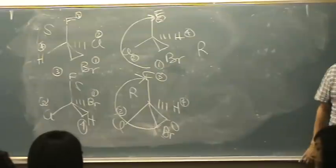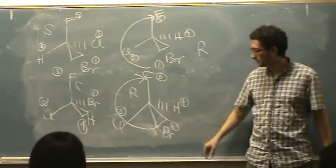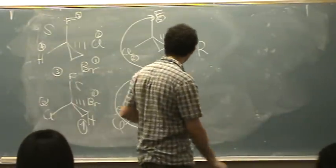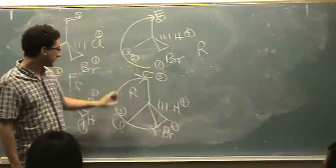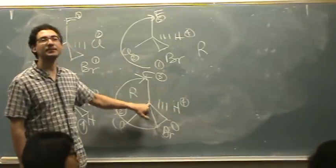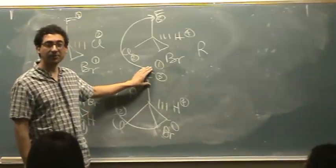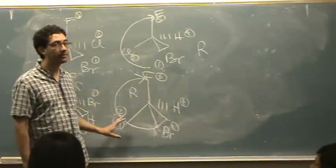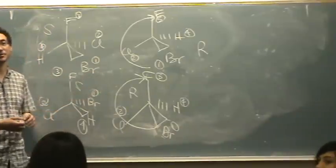Student question: if we changed our fluorine to a carbon, would it still be chiral? Yes — if this were a carbon, like a methyl group, it's still chiral because there are still four different groups. It doesn't matter that this matches with the carbon out here. In fact, this could be a methyl, this could be an ethyl, this could be a propyl — it's still chiral because there are four different entities on that central carbon.